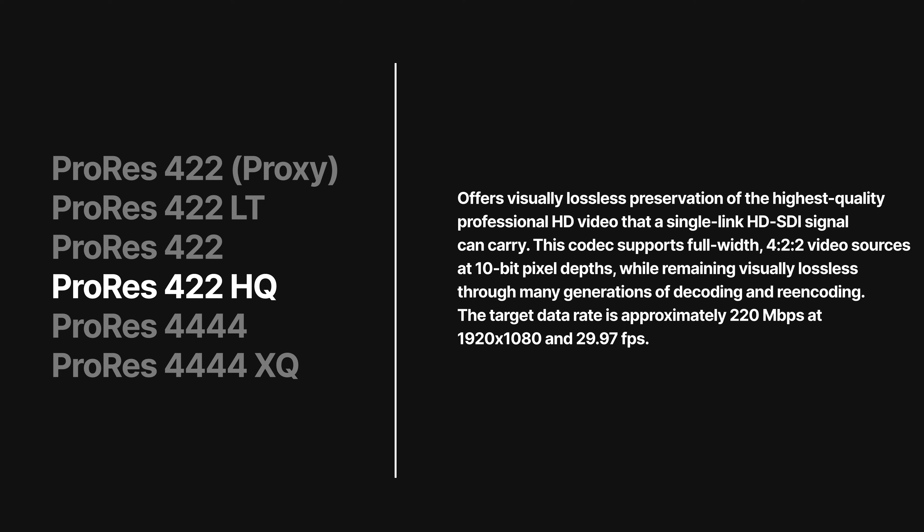Being visually lossless is also a big deal. All ProRes versions are lossy codecs — meaning these formats are mathematically speaking lossy — but the HQ version is visually lossless. In other words, it is visually indistinguishable from the original file when viewed alongside the original on identical displays.